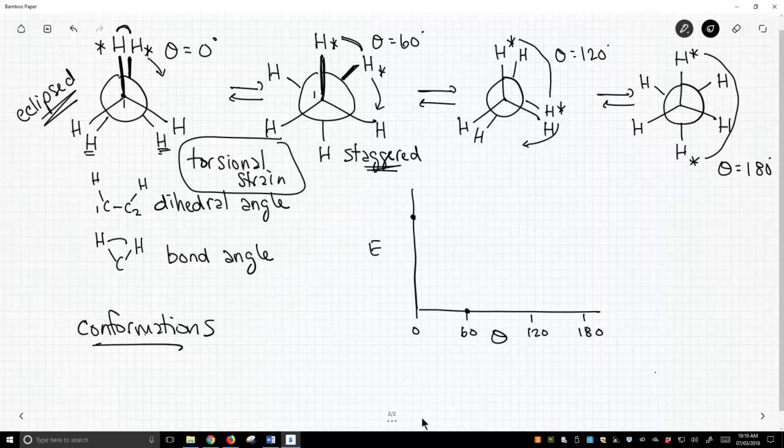Once we go back to 120, we bring these CH bonds, and I'm only highlighting these CH bonds. It's those CH bonds, too, and those CH bonds, as well. We go back up in energy, and then we go back to 180, and we get back to a new staggered conformation.